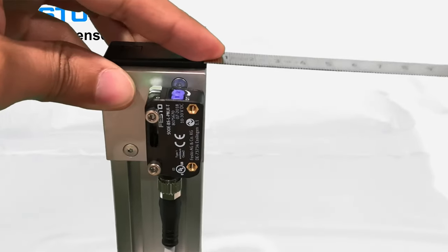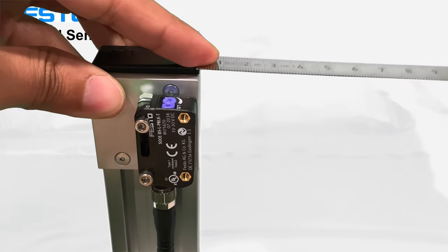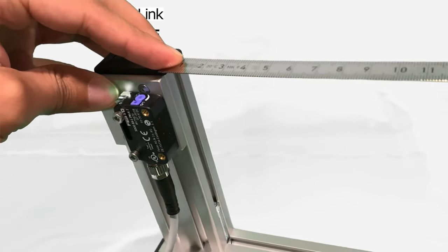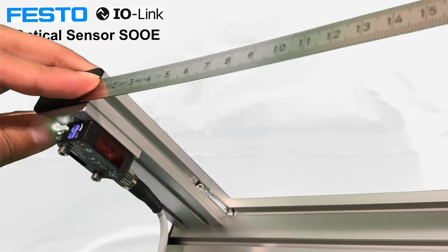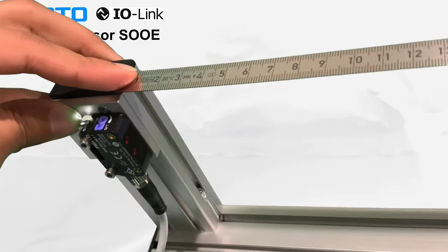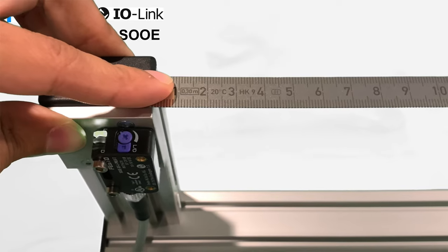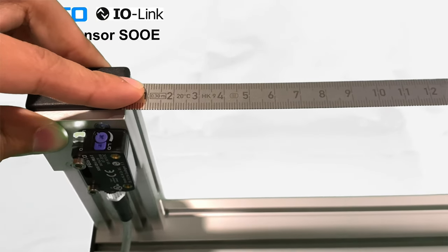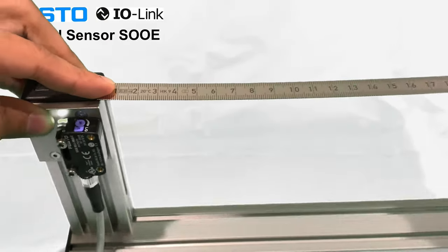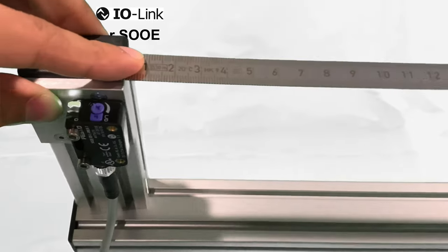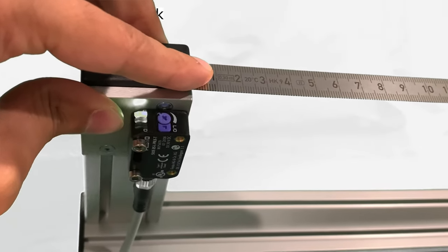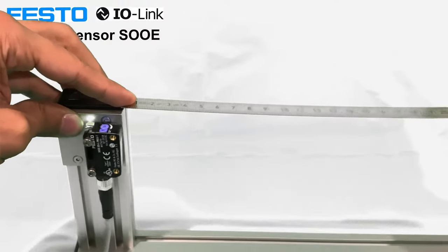This is the sensor, S-O-O-E. As you can see, it's an optical sensor with a laser coming out the front. On top, there's a potentiometer that allows adjustments we'll discuss shortly. On the back, there are LEDs that display the current status.